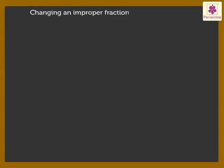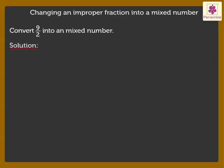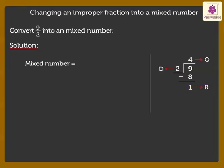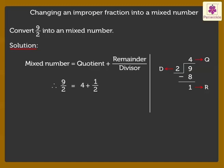Next, we will change an improper fraction into a mixed number. To convert, we divide the numerator 9 by the denominator 2. We get the quotient as 4 and the remainder as 1. We write the mixed number as quotient plus remainder upon divisor. Thus, 9 upon 2 equals 4 and 1 upon 2, which is 4 and half.